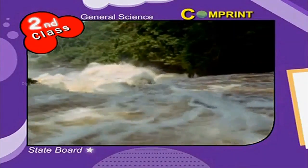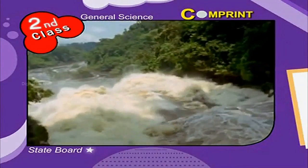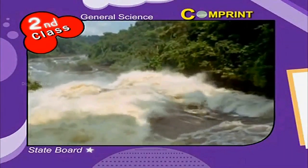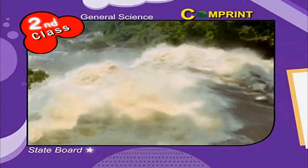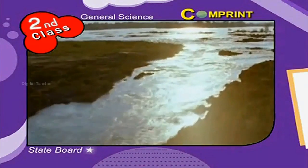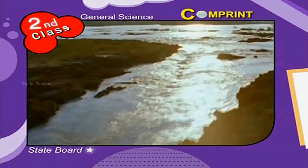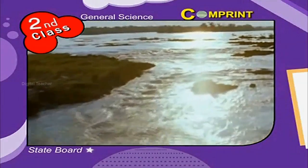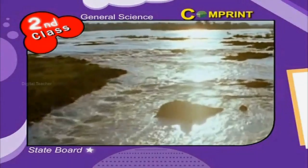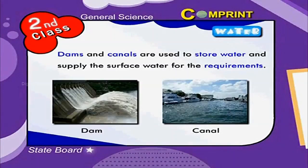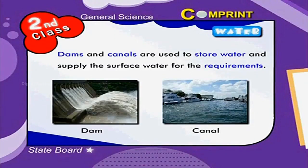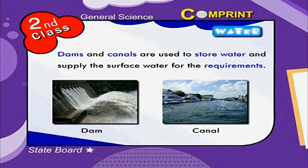We can see the water on the surface of the earth. This is called surface water — ponds, lakes, and rivers. Dams and canals are used to store water and supply the surface water for various requirements.